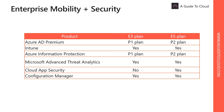One of the tools you can use to manage all of these devices in your organization is EMS, an intelligent mobility management and security platform. EMS is a suite of products included in your Microsoft 365 Enterprise subscription, provided as part of Microsoft 365 E3 and E5 plans.